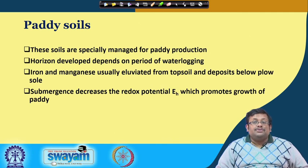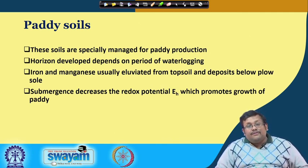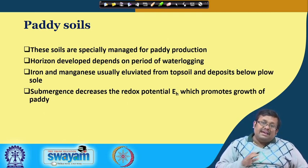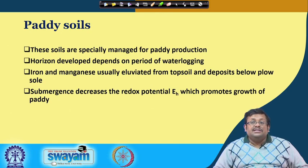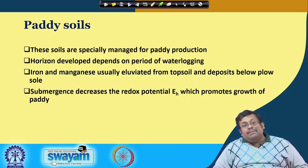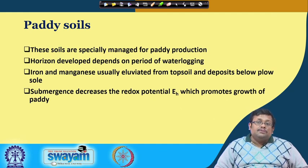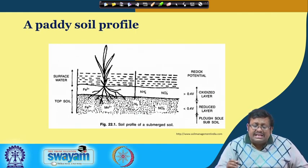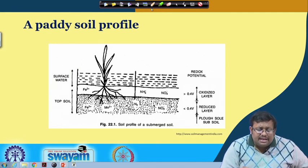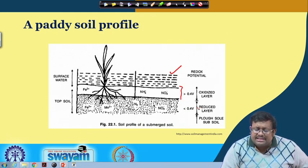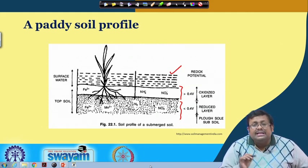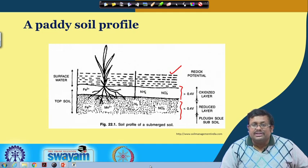Paddy soils are specially managed for paddy production; horizon development depends on the period of waterlogging. We generally do puddling to make an impervious layer so there is always standing water at the base of the plant. Iron and manganese are usually eluviated from the topsoil and deposited below the plough layer. Submergence decreases the redox potential (Eh), which promotes paddy growth. In the paddy soil profile, below the surface water there is a very thin oxidized layer, and below that a permanently reduced layer containing reduced fractions of different minerals and nutrients.